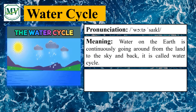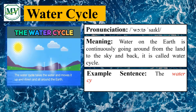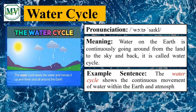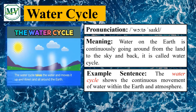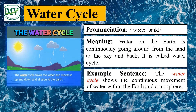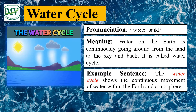Now let's learn an example sentence. The water cycle shows the continuous movement of water within the earth and atmosphere. Please read the sentence on your own. Fantastic!